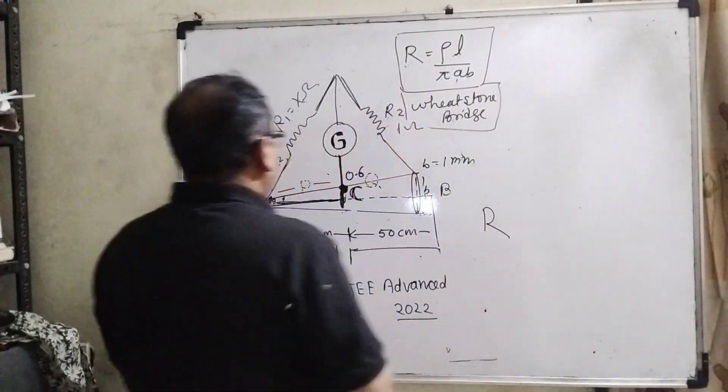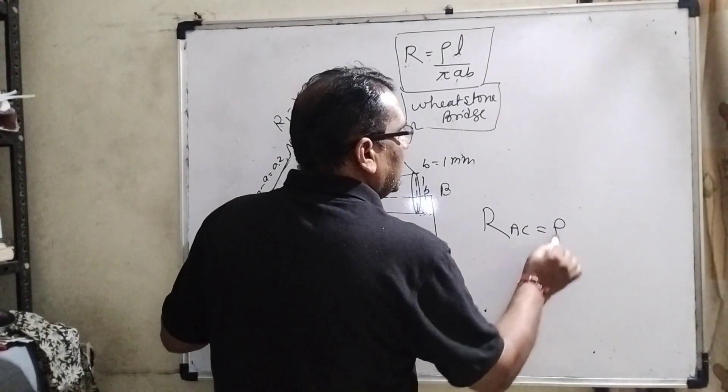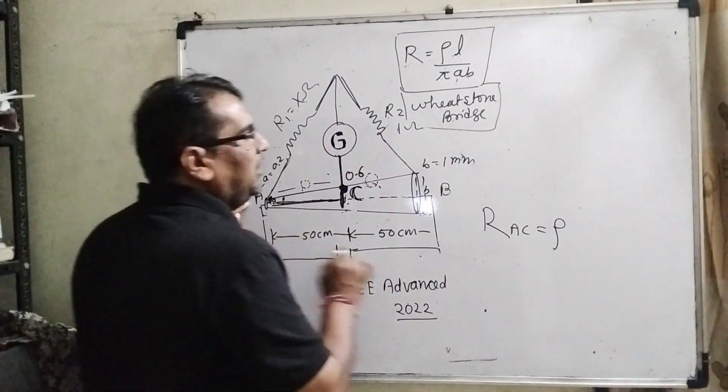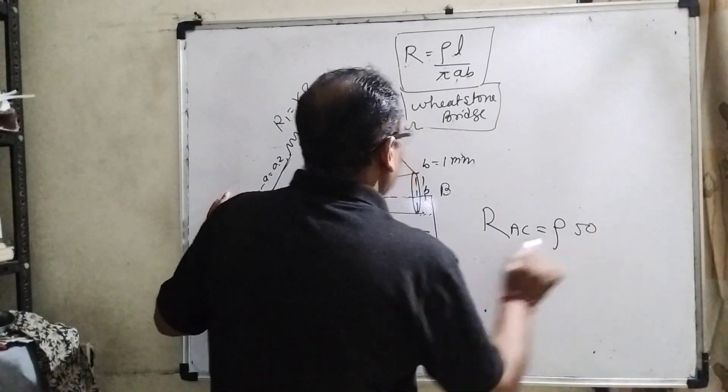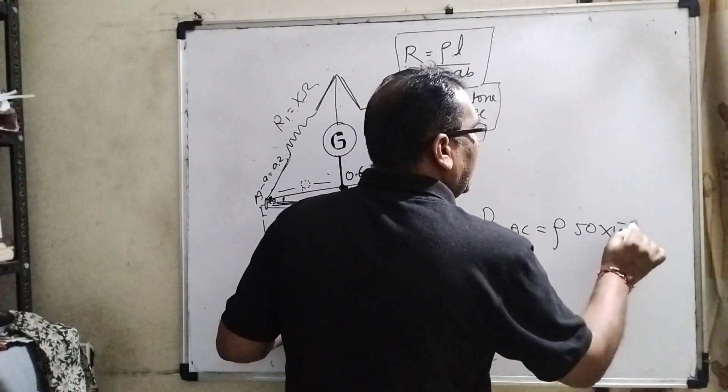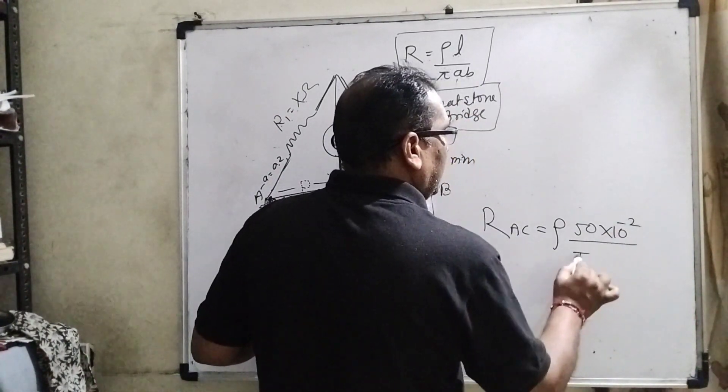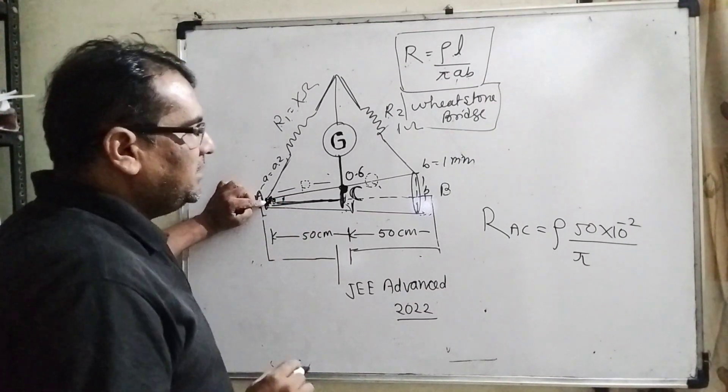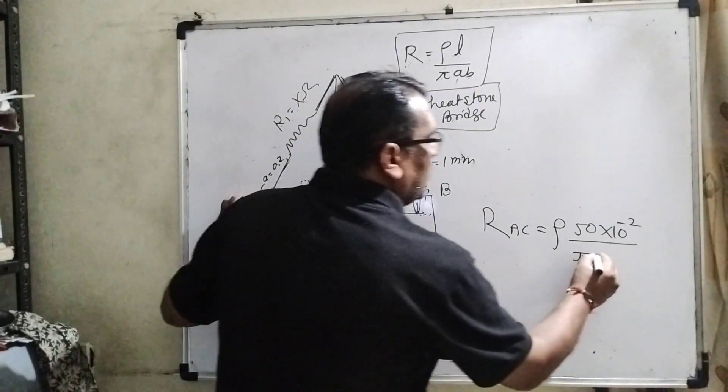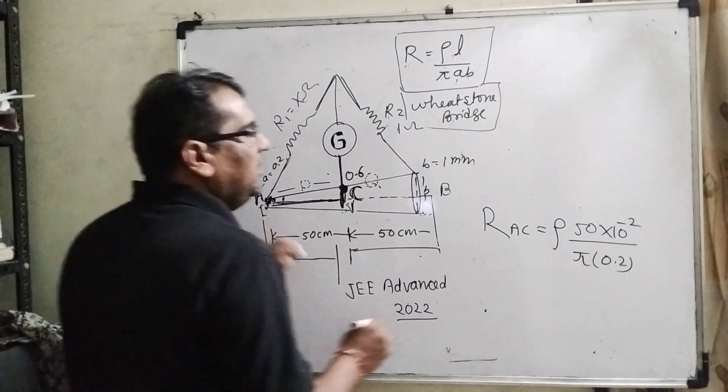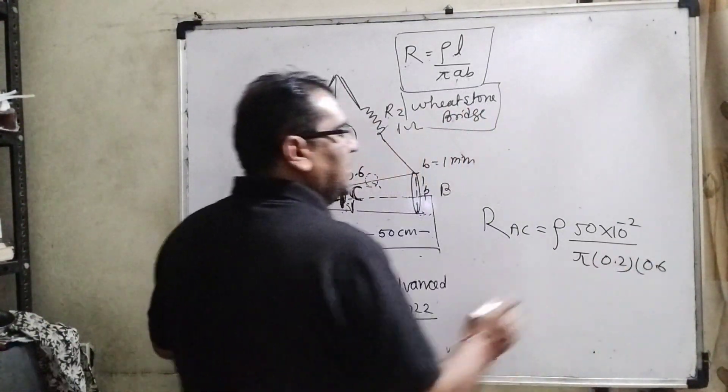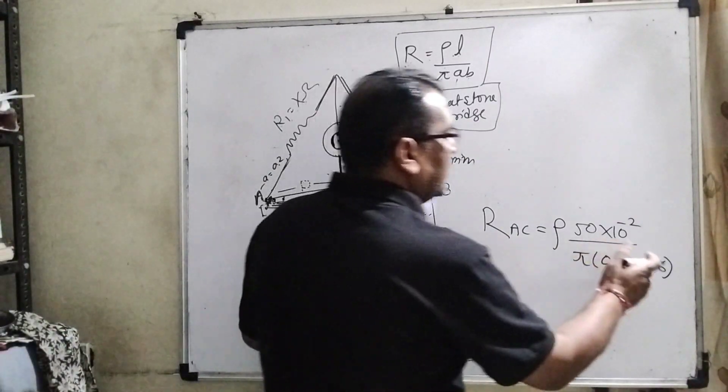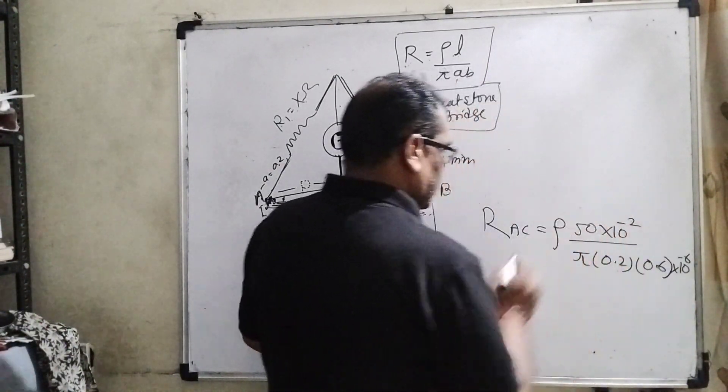Now resistance from A to C equal to rho (specific resistivity) times L. L means length A to C. Here 50 centimeter is given, convert into meter by multiplying 10 raised to power minus 2. Then pi AB. In this, A means first end A, the radius A. What is A? It is given 0.2. And what is the radius at C? 0.6. It is in mm. So let us first convert into meters: 10 raised to power minus 3 times 10 raised to power minus 3 means 10 raised to power minus 6. So here we have found the resistance R AC.